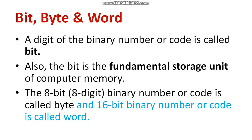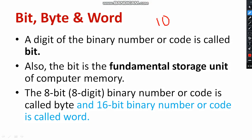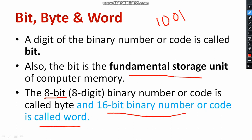First of all we have to understand what is a bit, byte, and word. A bit is the smallest unit — the fundamental storage unit of a computer memory. A digit of a binary number or code is called a bit. For example, in the binary number 1001, each of the digits — 1, 0, 0, 1 — are bits. One important relation to remember: one byte is equal to eight bits.